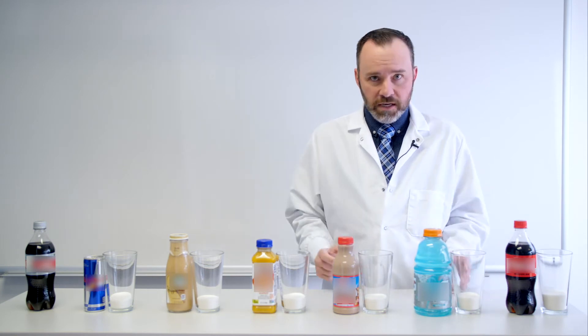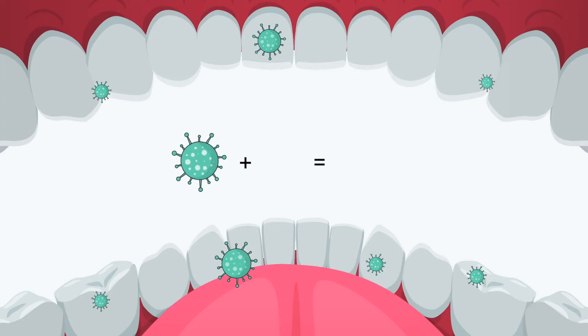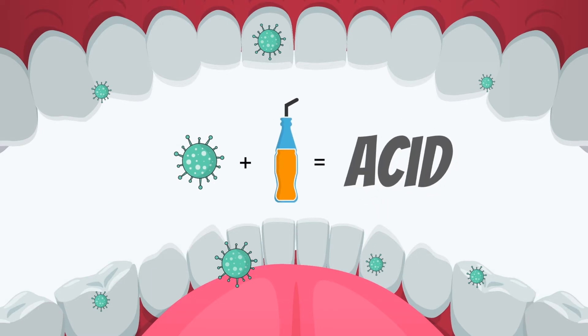So they're going to eat the sugar that we eat and then they produce as a byproduct acid. They create an acid as a byproduct or basically they poop acid as a result of eating sugar. And it's that acid that creates the environment that is ripe for causing cavities.